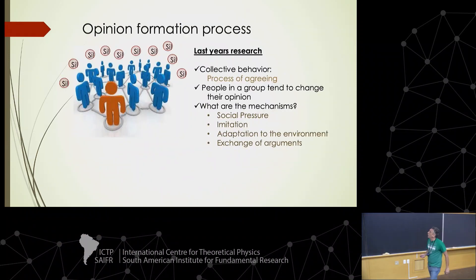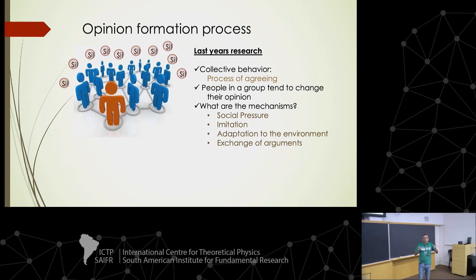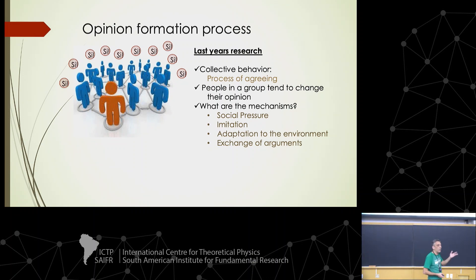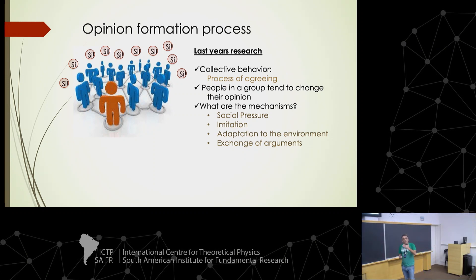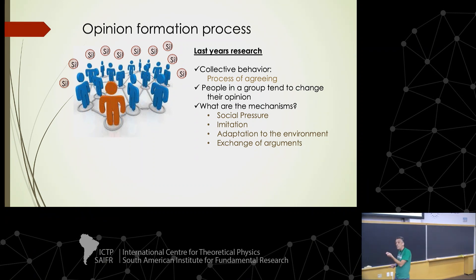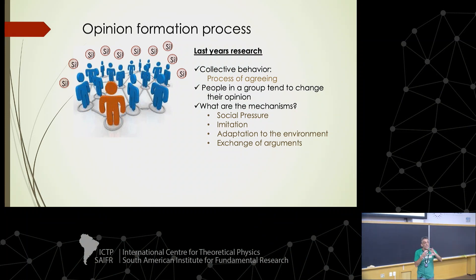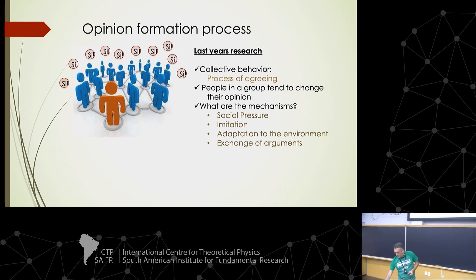The same concept of complex system applies when instead of neurons or birds we have people. When people interact, they produce collective behavior. In the second class today, I'm going to speak about opinion formation — people with a certain opinion about a given issue are prone to share their opinion when they interact, and as a result of this interaction, groups of the same opinion form, showing a spatiotemporal pattern.